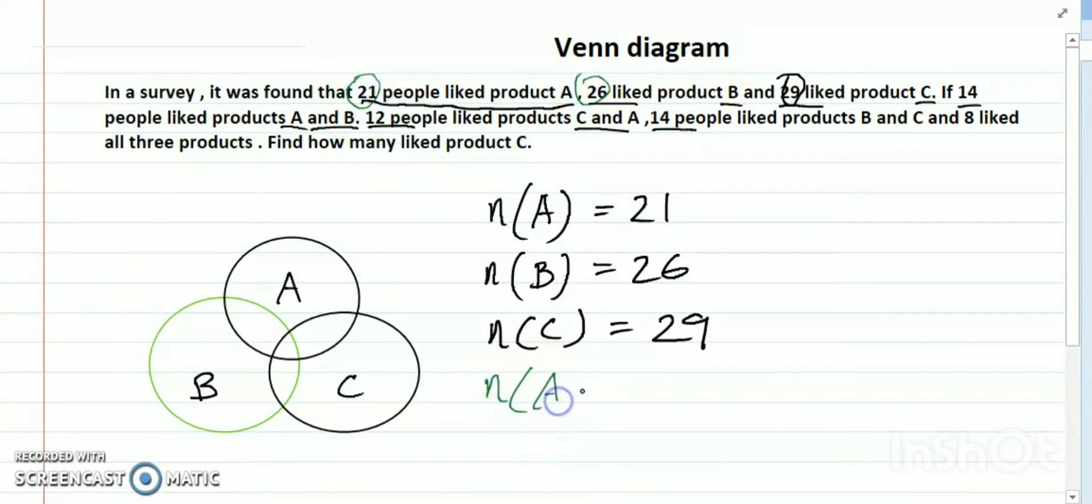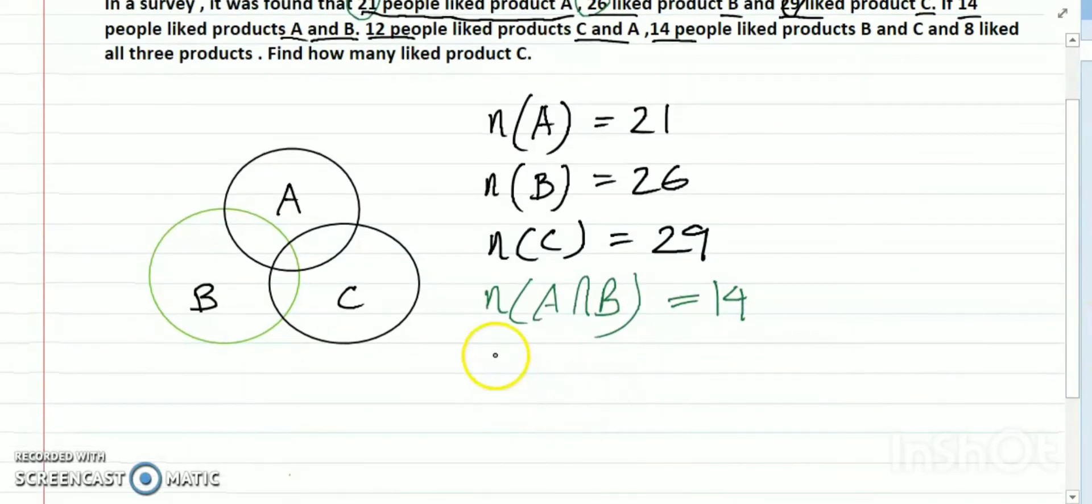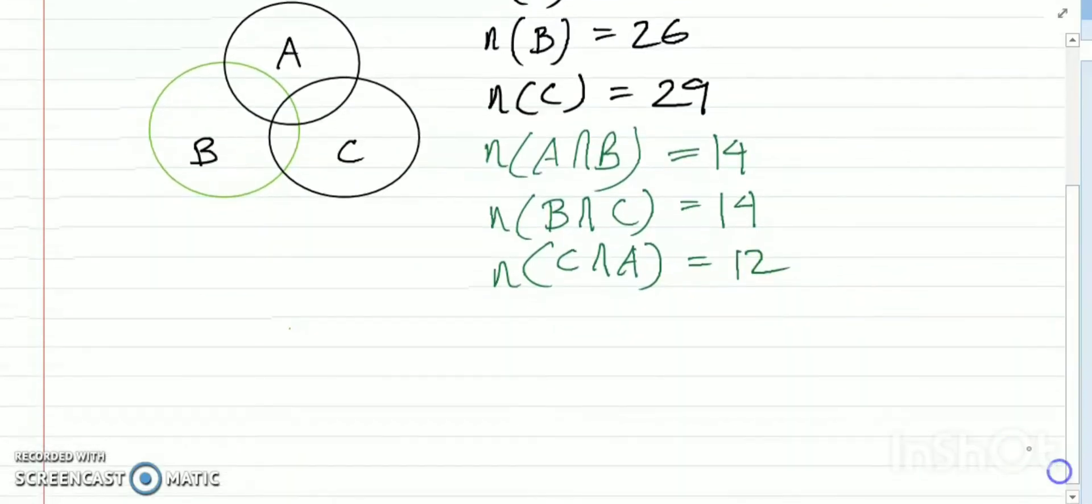N(A∩B) equals 14, N(B∩C) equals 14, N(C∩A) equals 12, and N(A∩B∩C) equals 8.